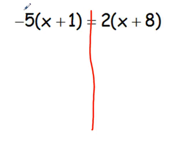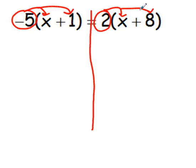We have some distribution here to do, so I'm going to mark my distribution with an arrow so that I know I need to multiply. Negative 5 times x is negative 5x, and negative 5 times positive 1 is negative 5, so we write minus 5. Then, 2 times x is 2x, and 2 times 8 is positive 16.